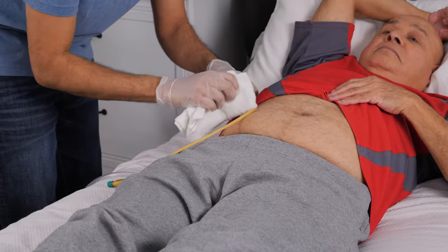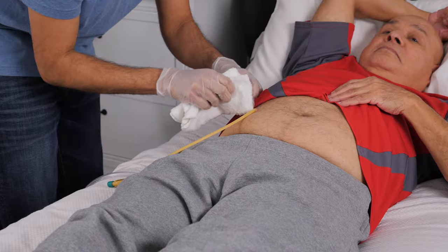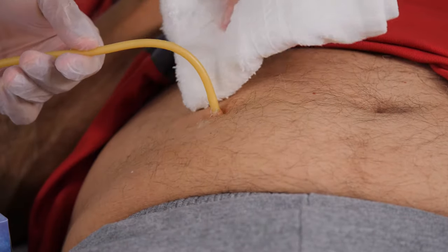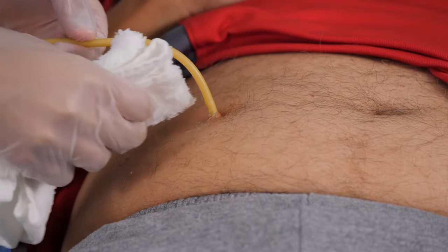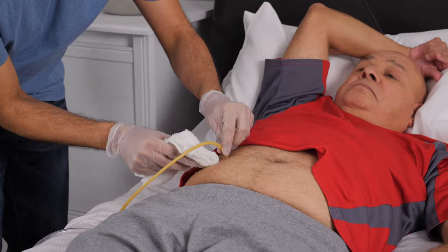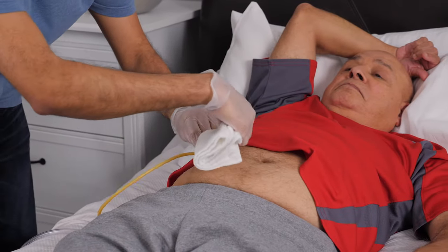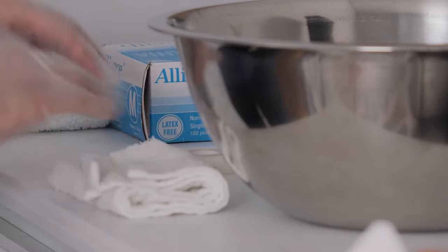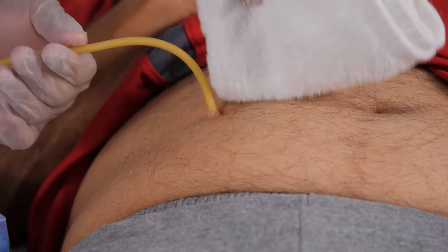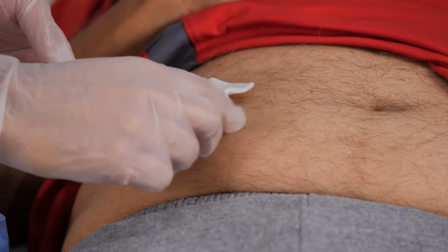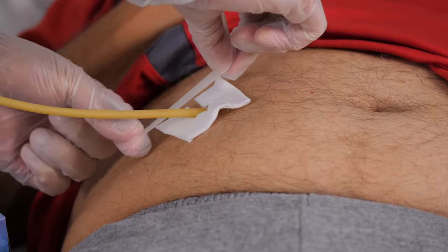When a suprapubic catheter is first put in, it may need to be cared for by a nurse. But once the surgery site is healed, think of it like an ear piercing. It's actually easier to clean. You can wash around the tube with soap and water, starting at the tube and cleaning outward in a circular motion. For both types, once they are washed, rinse well with clean water and pat dry. Sometimes people like to have a piece of gauze placed around the suprapubic tubing like this to make it more comfortable.